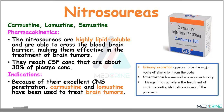Another class of alkylating agents is the nitrosoureas. In the nitrosoureas we have drugs such as carmustine, lomustine, and semustine. The nitrosoureas are highly lipid-soluble drugs and are able to cross the blood-brain barrier, making them very effective in the treatment of brain tumors. These nitrosoureas reach cerebrospinal fluid concentrations which are about 30-40% of the plasma concentration. Because of their excellent central nervous system penetration, we use carmustine and lomustine in the treatment of brain tumors. Urinary excretion is the major route of elimination. Streptozocin is a notable drug in this class with minimal bone marrow toxicity and great activity in treating insulin-secreting islet cell carcinoma of the pancreas.